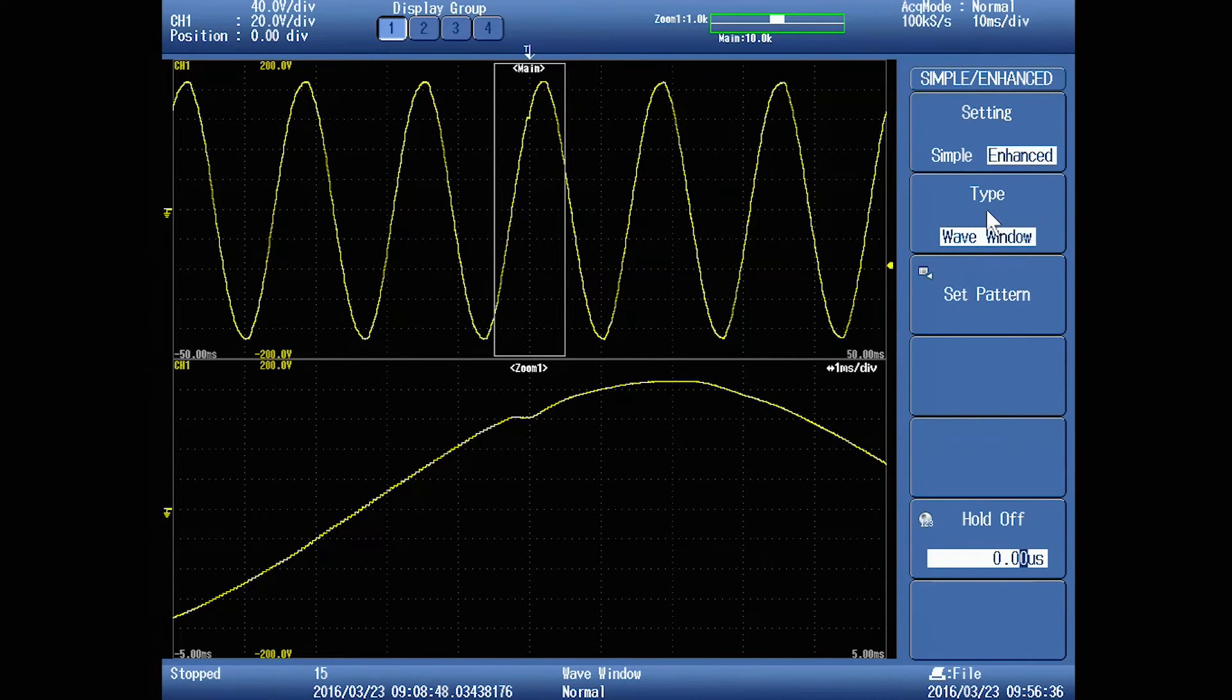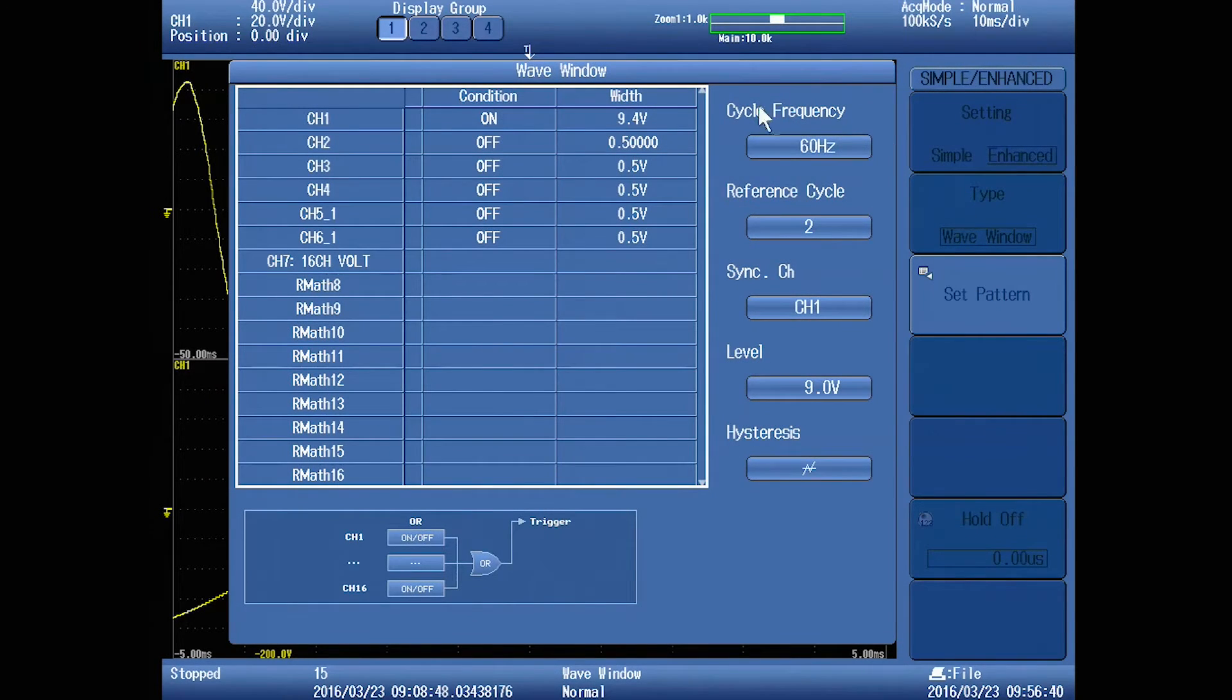You're going to set type as wave window, and under pattern there are several settings. One is to tell it which channel to watch, that's channel one in this case. You're going to give it what's called width. If this were nine volts exactly, it would tolerate plus and minus four and a half volts of voltage around your nominal sine wave.